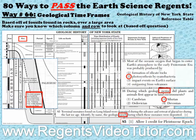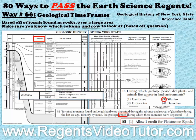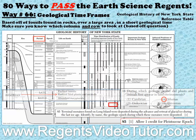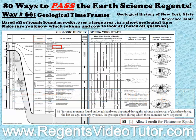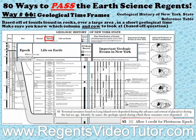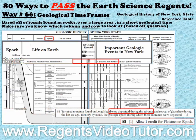For the period question, it was during the Silurian period when plants and animals first appeared in land environments. And for the epoch question, it was during the Pleistocene epoch that the advance and retreat of the last continental ice occurred.